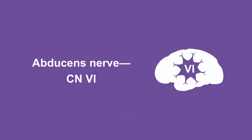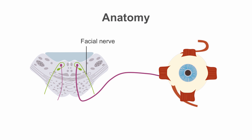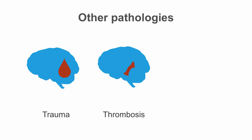The abducens nerve, cranial nerve 6, has its nucleus located in the pons. Its course takes it into the cavernous sinus and then into the orbit. Cranial nerve 7 passes dorsally around the nucleus of cranial nerve 6. Cranial nerve 6 innervates the lateral rectus muscle, which moves the eye laterally. Trauma to the orbit, cavernous sinus thrombosis, and tumors in the cerebellopontine angle region may also affect this cranial nerve.